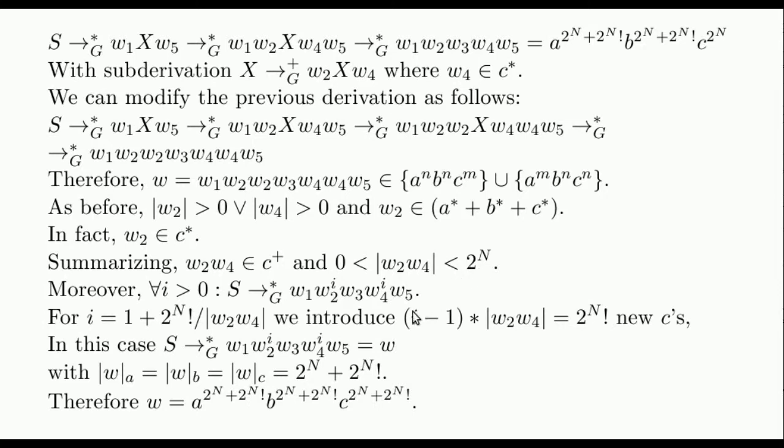For this i, it follows that we will have inserted 2^N! new c's. In this case, the amount of a's, b's and c's matches, and therefore the generated word w must be this one.